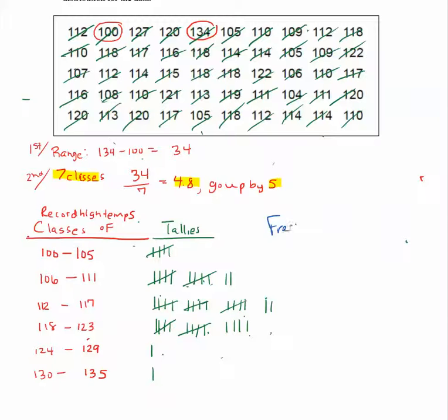So now we do the frequencies. Just count your tally marks and count by five. So I have five in the first class: 5, 10, 11, 12 in the second. 5, 10, 15, 16, and 17 in the third. 5, 10, 14 in the next class. And then I have one and then I have one.